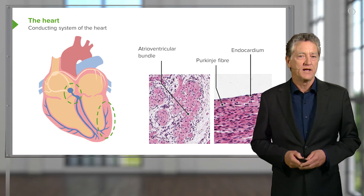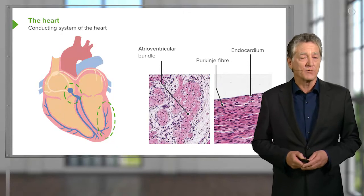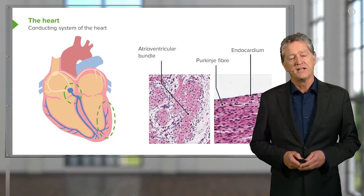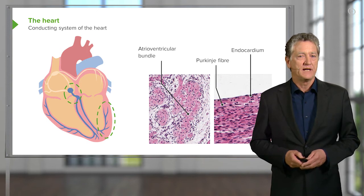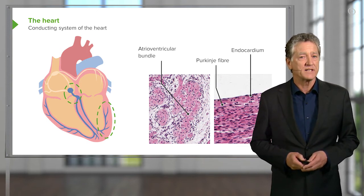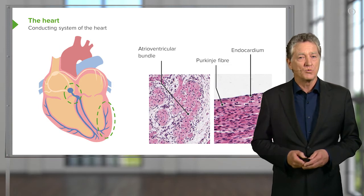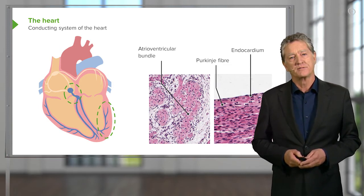The white circular structure up at the top, actually lying right next to the entry of the superior vena cava, is the sinoatrial node. And it has processes — Purkinje fibres or conducting fibres — radiating from that sinoatrial node.